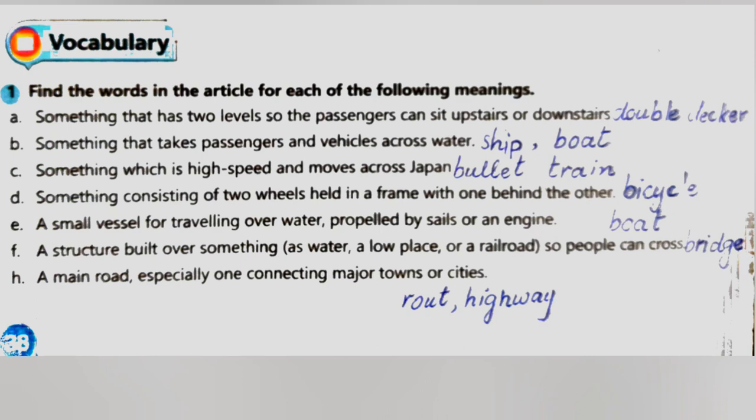B: something that takes passengers and vehicles across water. The answer is ferry. C: something which is high speed and moves across the country. The answer is bullet train.